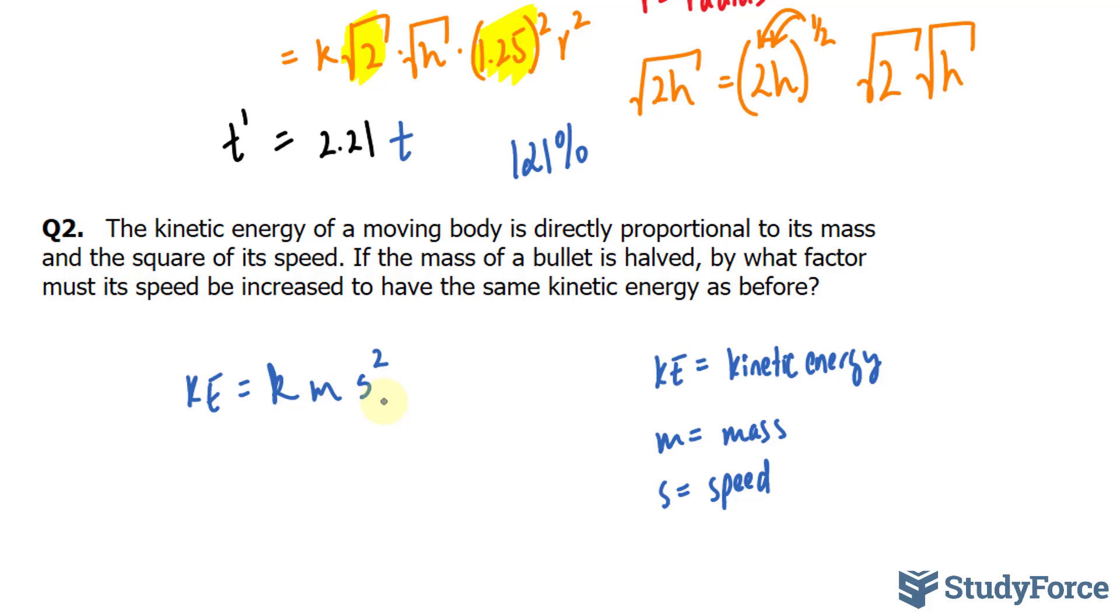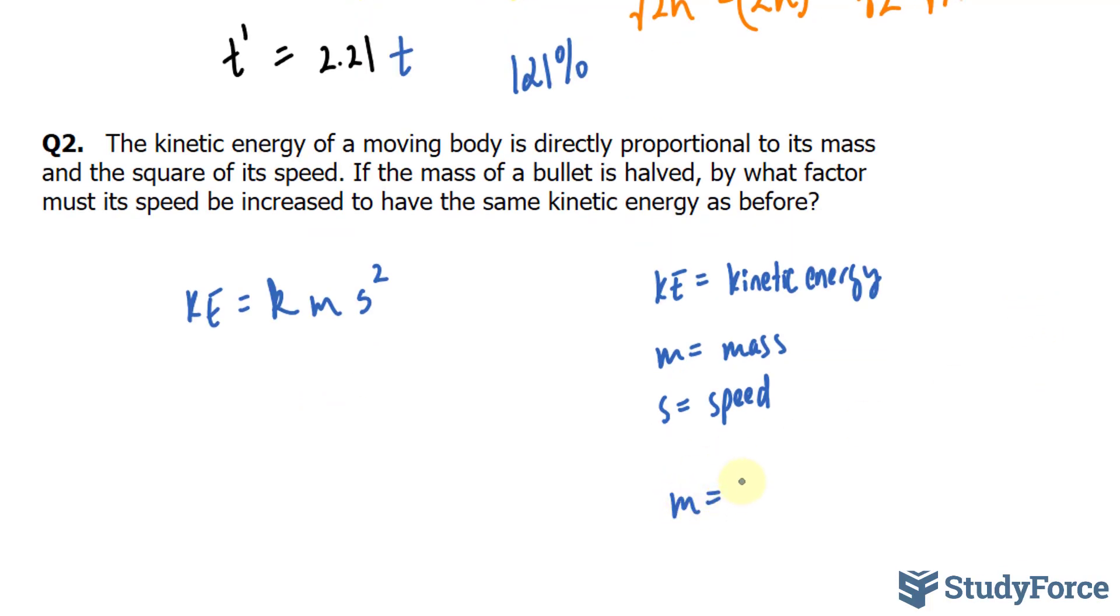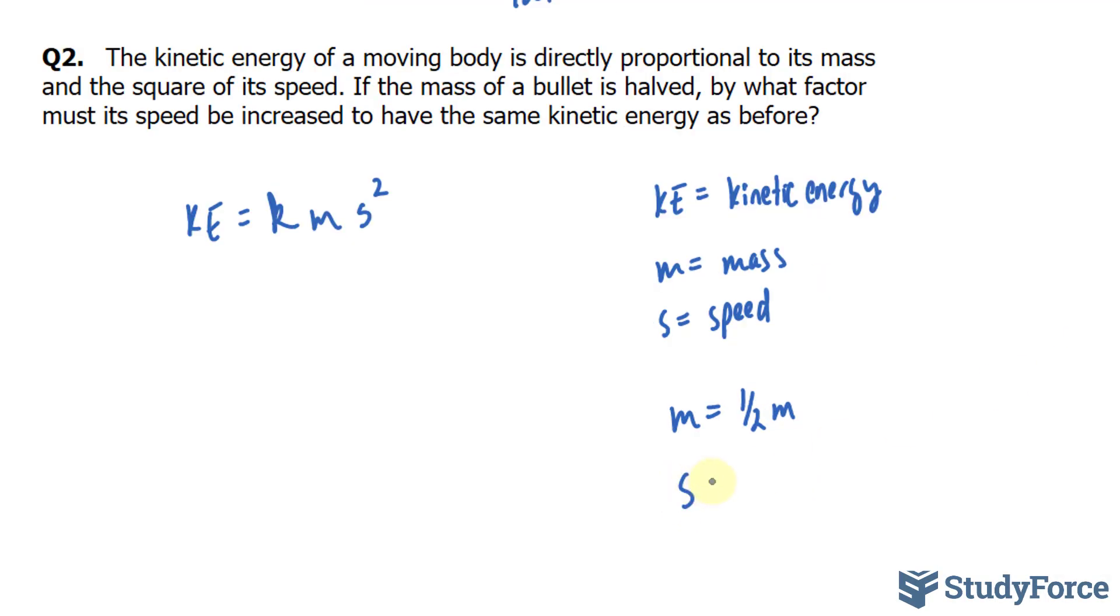The after conditions, mass has become half of the original and we're looking for speed. To denote the difference between the original speed and the final speed, I can write down S subscript F or S prime. I'll just use S prime, but feel free to use S subscript F. This is what we're looking for.